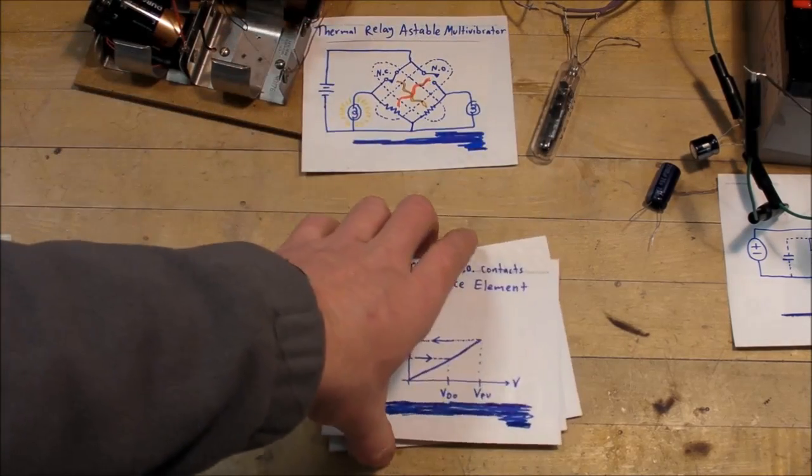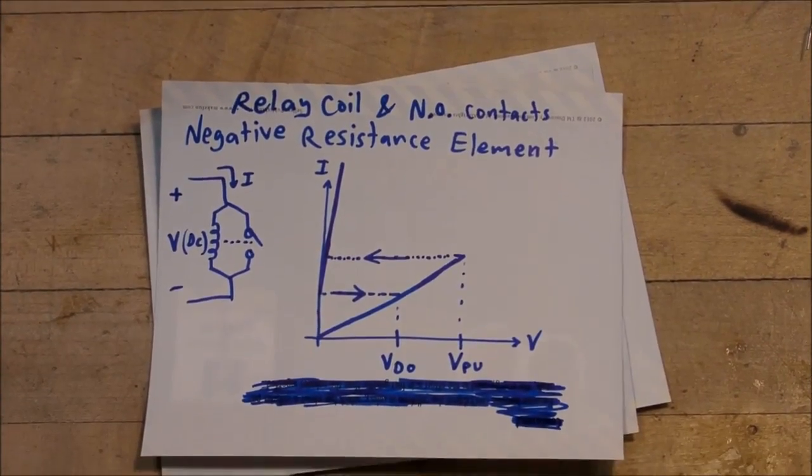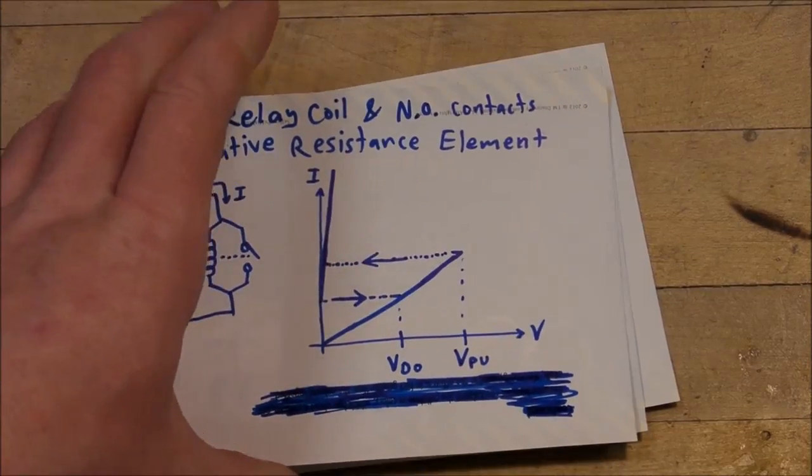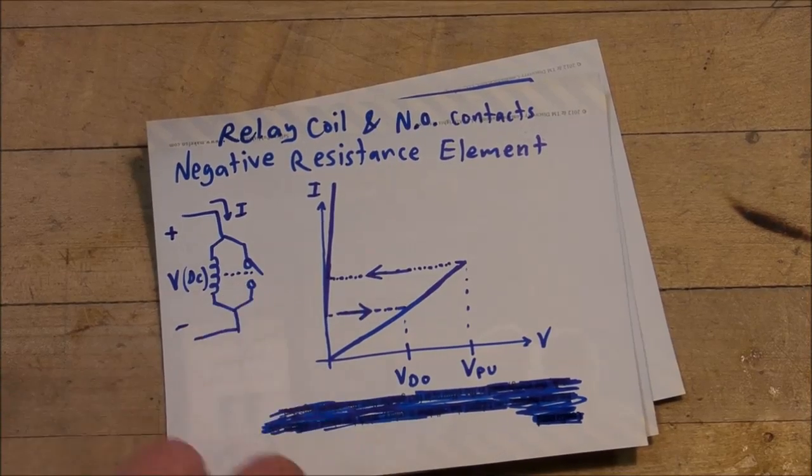But basically this is what it looks like. If you hook up the coil in parallel with one of its normally open contacts, then you can consider that to be a negative resistance element.